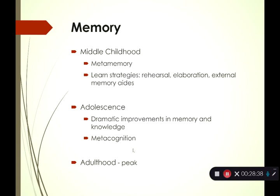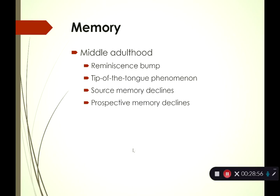In young adulthood, congratulations — your memory is as good as it's going to get. Making lists becomes really important. In middle adulthood, ages 20 to 40, an interesting phenomenon is the reminiscence bump — for some reason, memories from your 20s and 30s seem to be the most vivid in older adults. Going into age 40 and beyond, those college years, first job, and friendships from your 20s and 30s remain especially prominent.